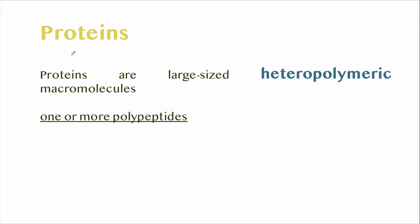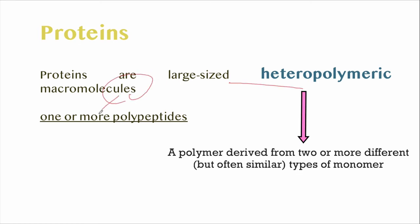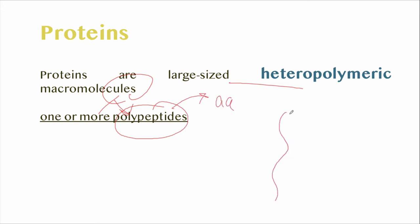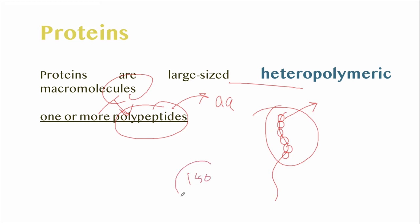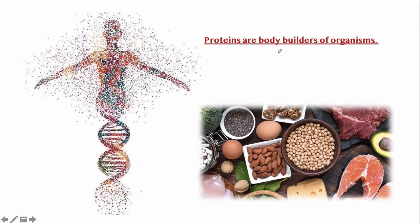So now let's see what proteins are. Proteins are large-sized heteropolymeric macromolecules having one or more polypeptides. Polypeptides are chains of amino acids. Sometimes the term polypeptide is used interchangeably with protein. However, a single polypeptide must be at least 150 amino acids long in order to qualify for the term. Proteins are the bodybuilders of organisms.